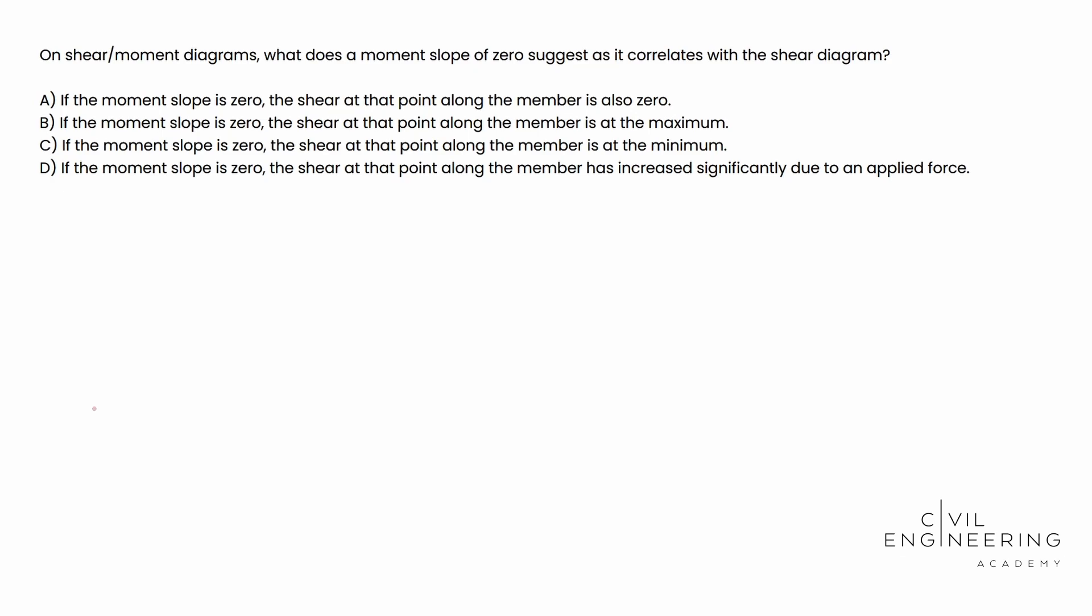So here's what the question says. On shear moment diagrams, what does a moment slope of zero suggest as it correlates with the shear diagram? All right, so we see our four options available to us, A through D there.